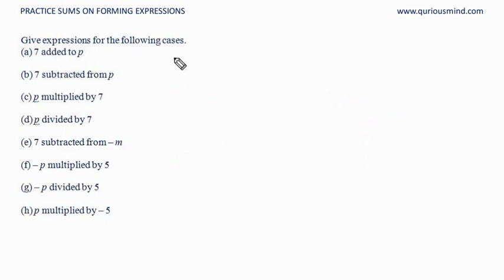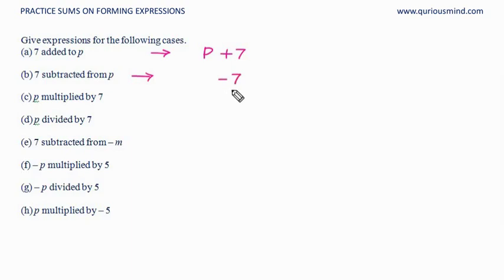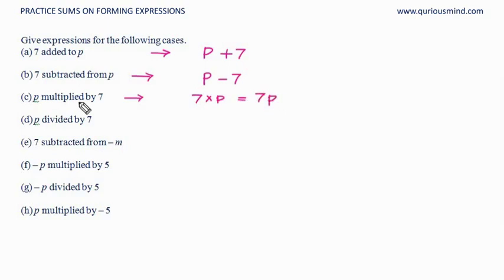Give expressions for the following cases. 7 added to p: p + 7. 7 subtracted from p: p − 7. p multiplied by 7: we don't write the multiplication sign, so it is 7p. p divided by 7: p ÷ 7, or written as a fraction p/7.